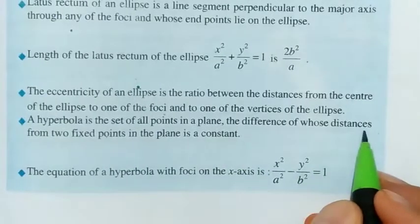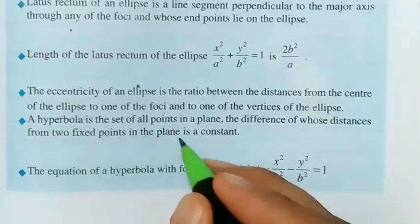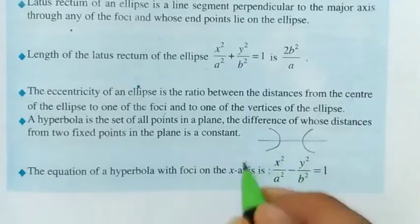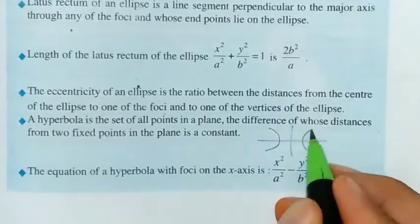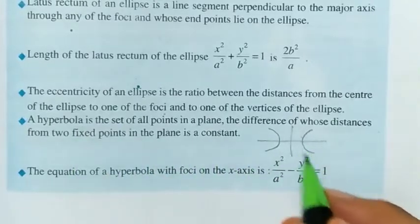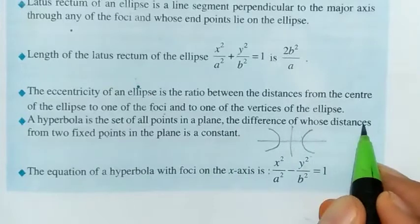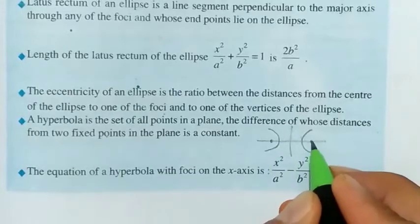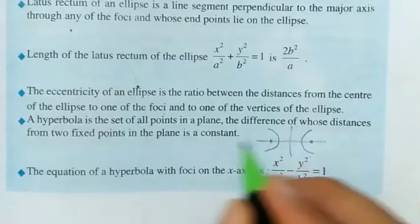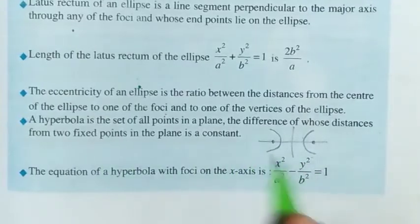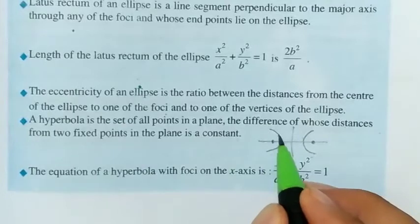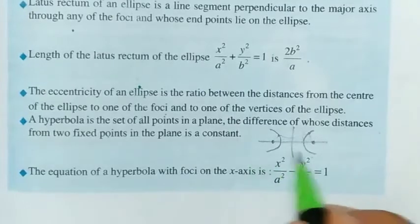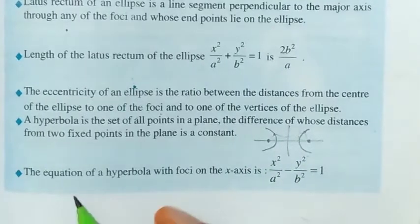Now, the hyperbola. A hyperbola is the set of all points in a plane the difference of whose distances from two fixed points in the plane is a constant. As shown, for any point on the hyperbola, the difference of its distances from the two foci is constant.